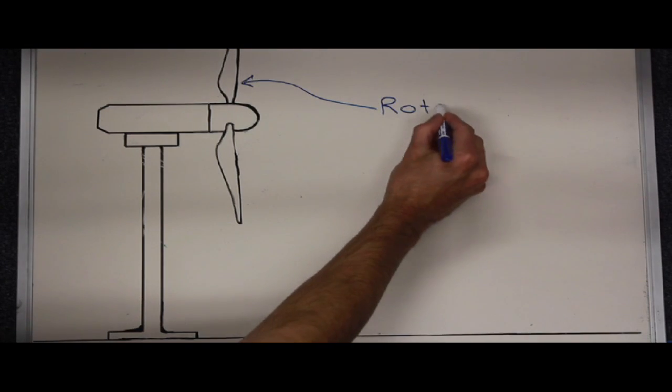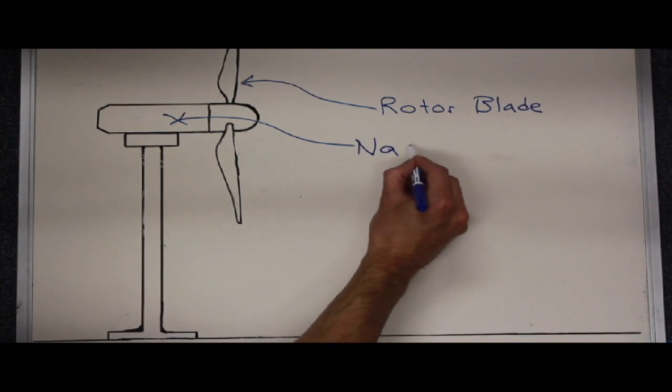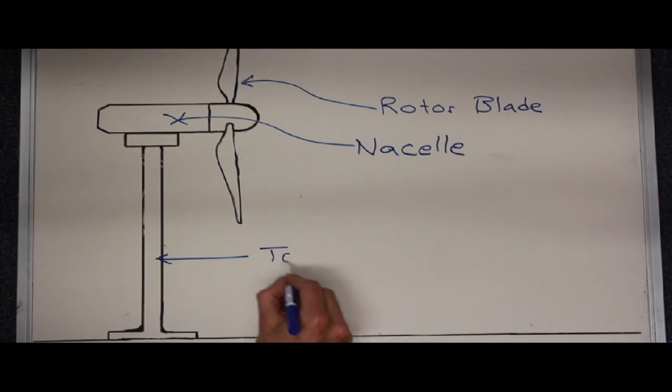Modern wind turbines consist of three parts: rotor blades, nacelle, and tower.